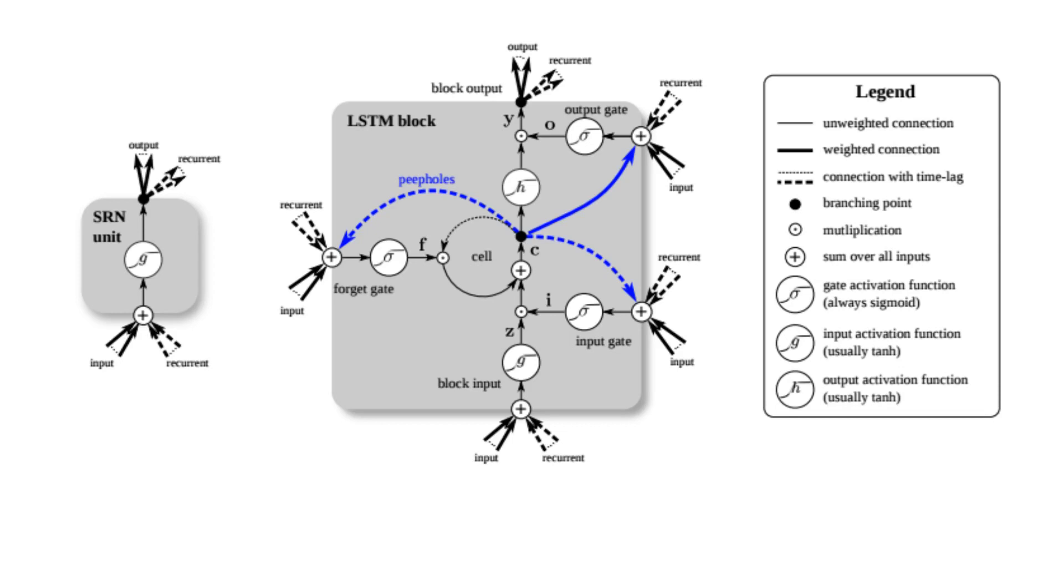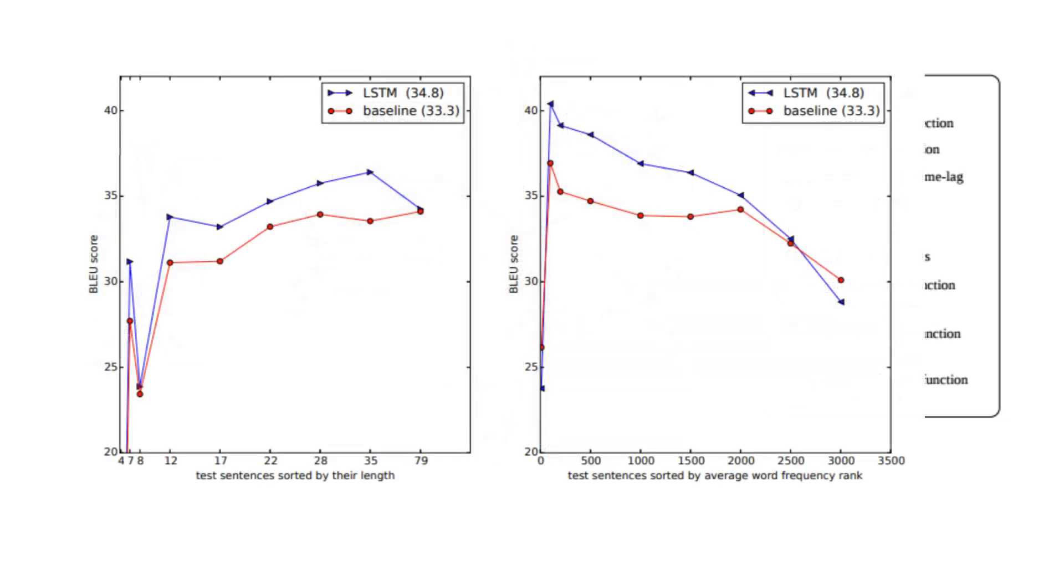The paper by Google researchers demonstrated that a deep LSTM-based sequence-to-sequence model could outperform more traditional phrase-based machine translation systems on a major benchmark. This was a significant result at the time, because phrase-based systems had been the state-of-the-art in machine translation for many years. The paper showed that not only could neural networks be used for machine translation, but they could also surpass existing methods, sparking a revolution in the field.